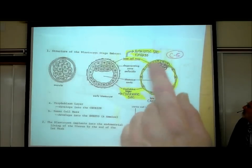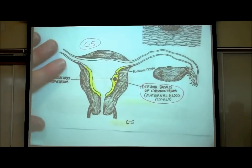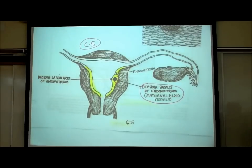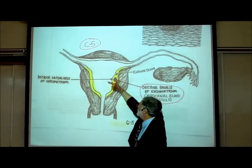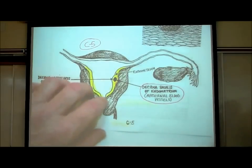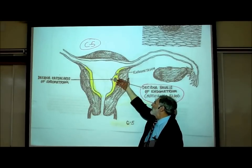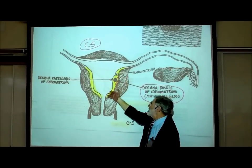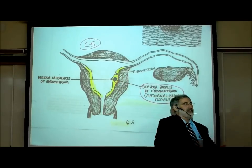Some of these inner cell mass cells will become the amniotic sac, some will become the actual baby and other structures. The bottom picture on C5 shows that by the end of the first week, this blastocyst has implanted in the endometrial lining of the uterus. It could have implanted anywhere in the endometrial lining.